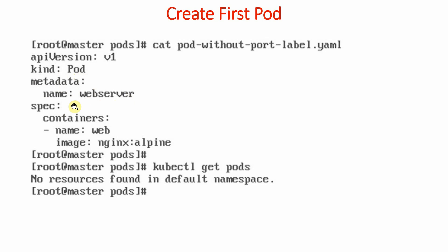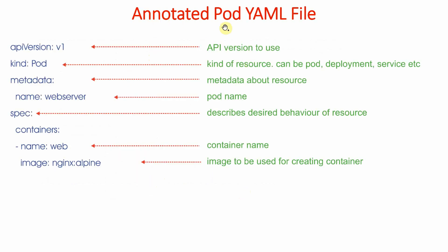This is the pod definition. We are using API version v1, kind of object is Pod, metadata specifies what the name of the pod should be — in this case 'web-server'. The specification defines what this pod is going to create: containers. We are specifying that this pod is going to create one container, the name of the container is 'web', and it will be based on the nginx image. Before creating the pod using this definition, we can run 'kubectl get pods' — it says 'no resources found in default' because we just created the cluster and have not created any pods yet.